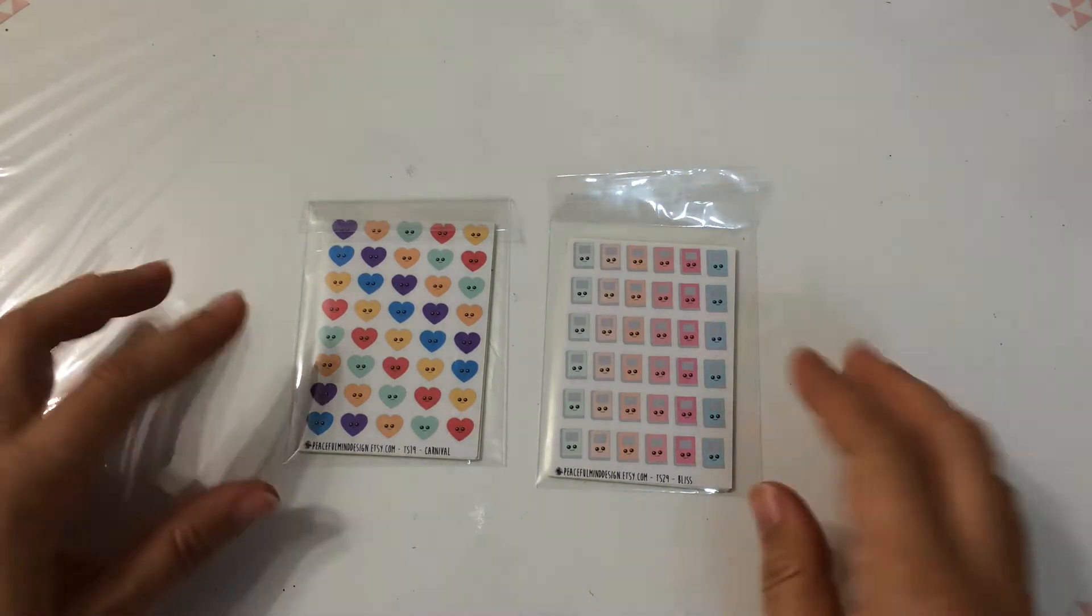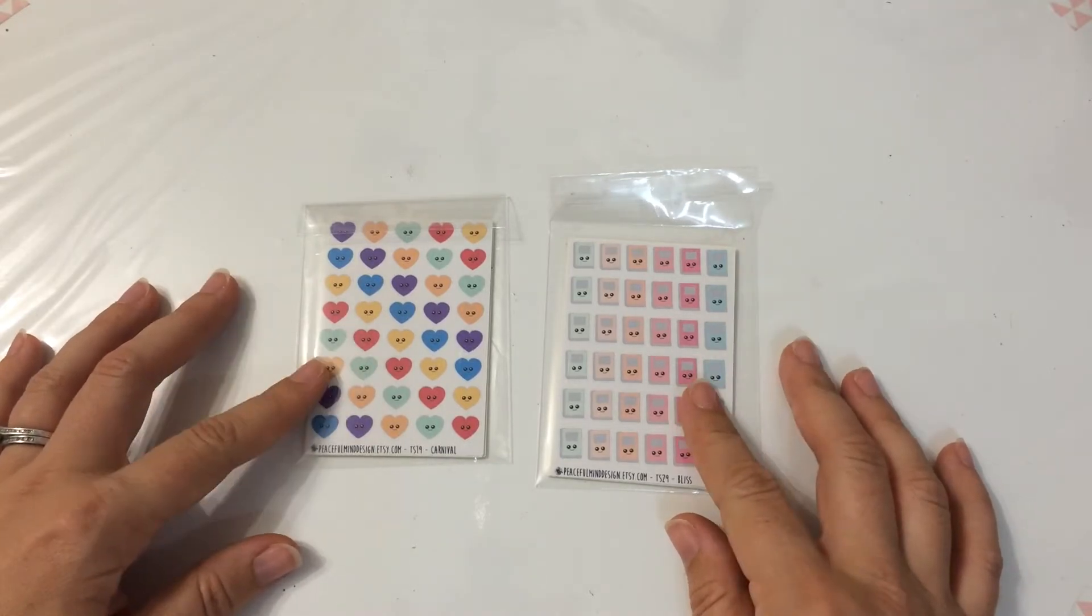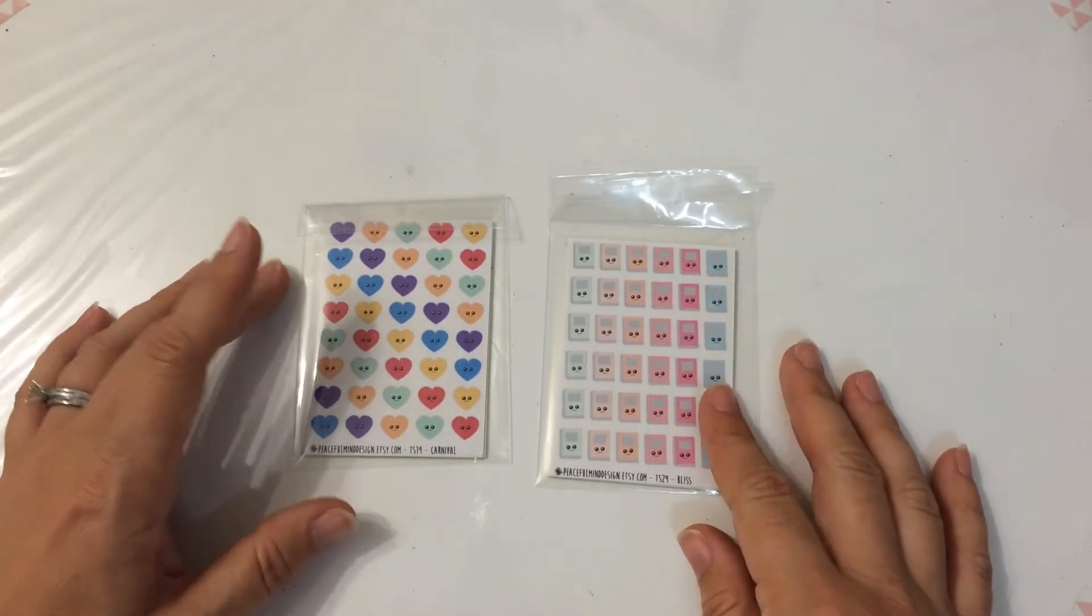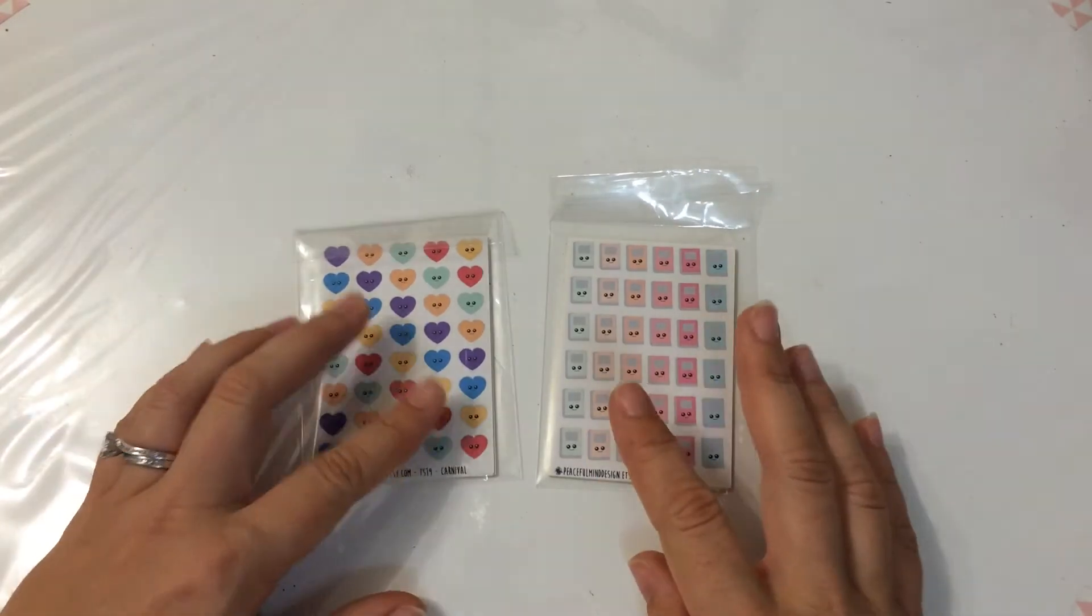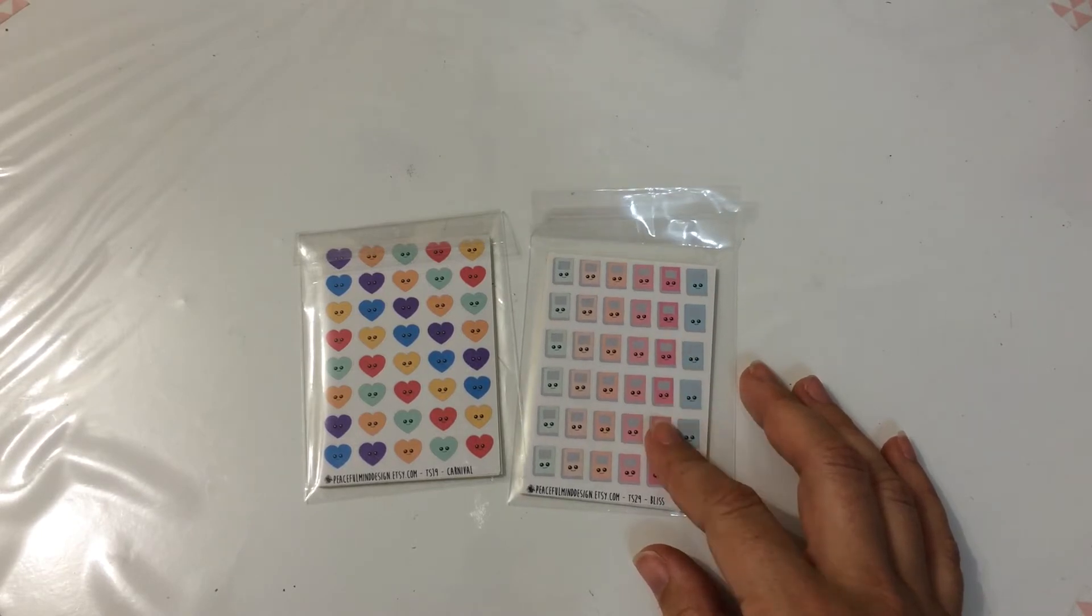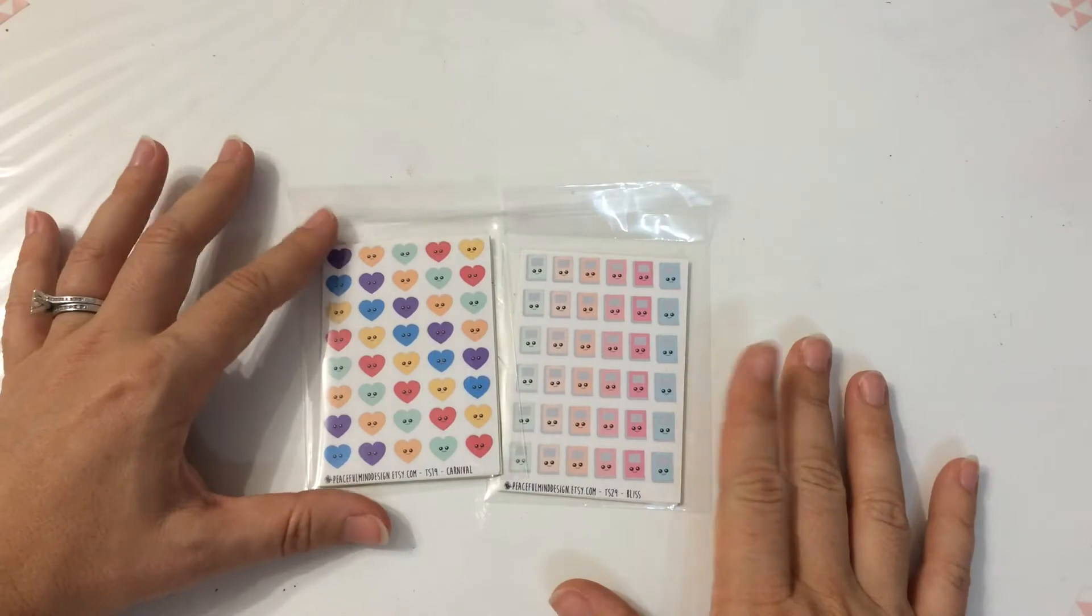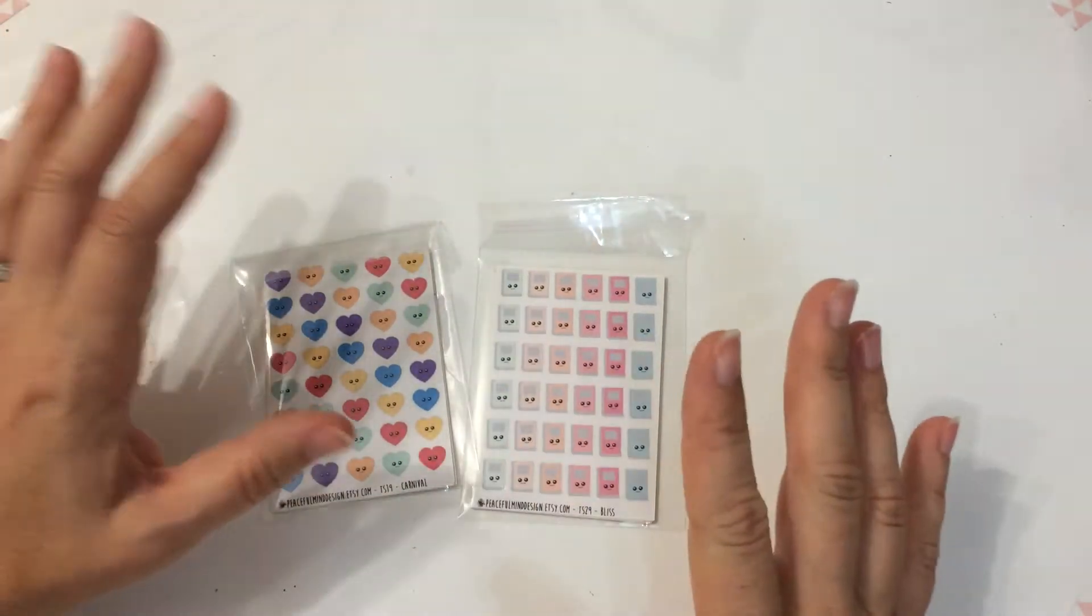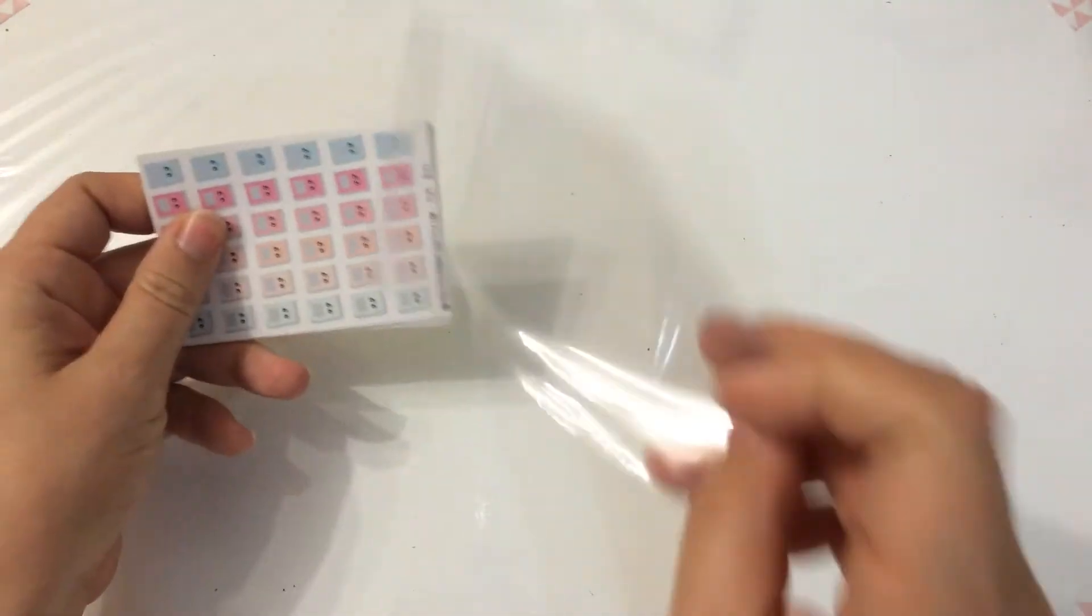The next is two little grab bags from Peaceful Mind Design. They were called tiny cute icon grab bags and they were 40% off. I think they were six dollars Australian. I hate how Etsy turns everything into American dollars. Drives me crazy. But I bought two of her packs and these are so cute. They're so tiny.